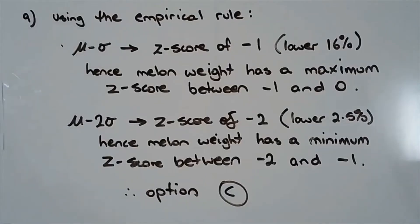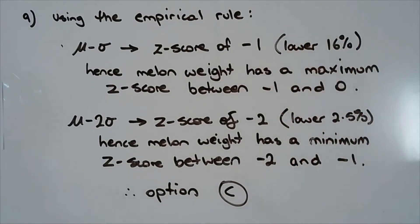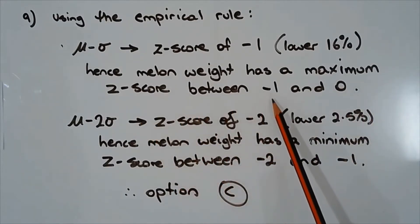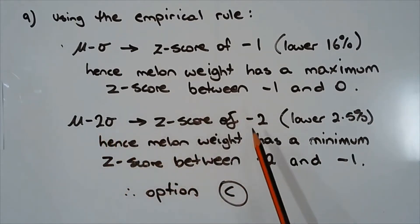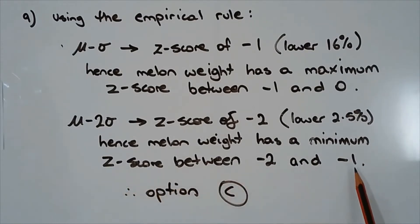Referring to the empirical rule, mu minus sigma corresponds to a z-score of negative 1, which is the lower 16% of the normal distribution. But the melon weight lies in the bottom 25%, so the maximum z-score is somewhere between negative 1 and 0. Also, mu minus 2 sigma corresponds to a z-score of negative 2, which is the lower 2.5%. Since the melon is not in the bottom 10%, the minimum z-score is between negative 2 and negative 1. Therefore the answer is option C.